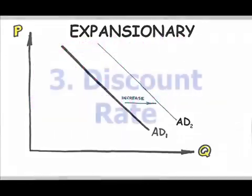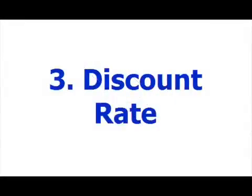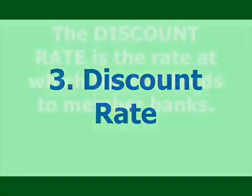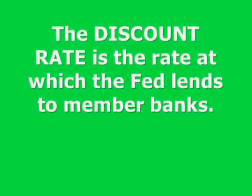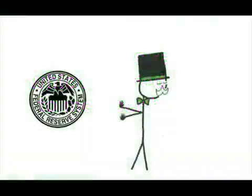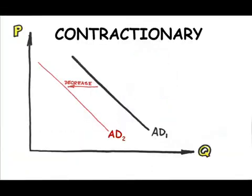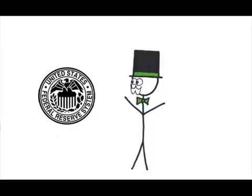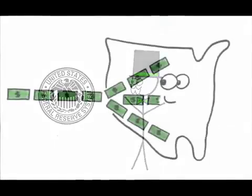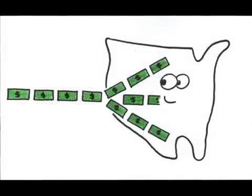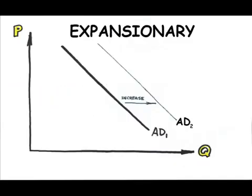The third tool, the discount rate, is the interest rate at which commercial banks can borrow from the Fed. At a higher interest rate, banks are less inclined to borrow, which slows the economy — contractionary policy. At a lower interest rate, banks are more inclined to borrow, putting more money in circulation and stimulating the economy — expansionary policy. Here's the kicker, though: sometimes, even at very attractive rates, banks don't want to borrow from the Fed.